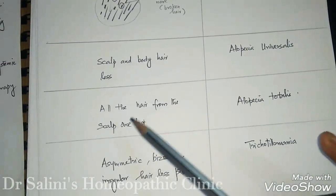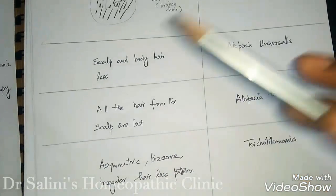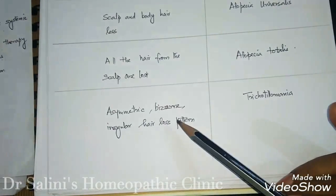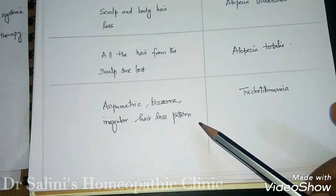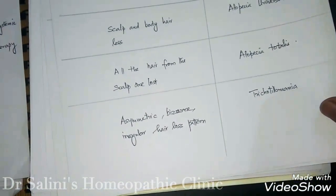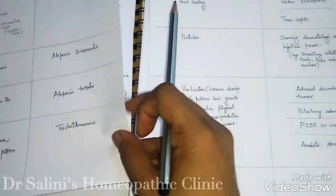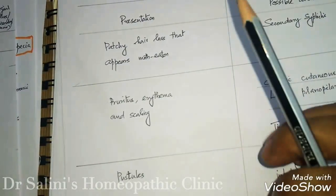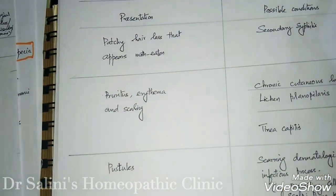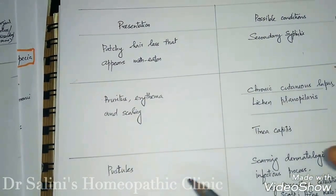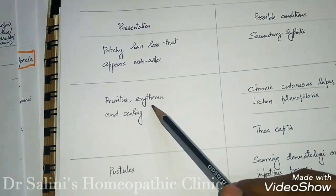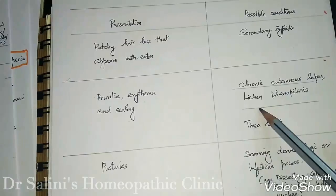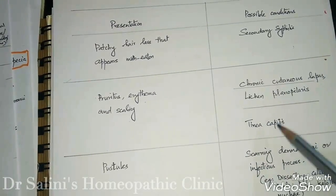When scalp and body hair loss occur together, the possible condition is alopecia universalis, where all hair from the scalp is lost leaving a polished scalp — this is alopecia totalis. Asymmetric, bizarre, irregular hair loss patterns can be seen in trichotillomania. Patchy hair loss that appears moth-eaten is secondary syphilis. Crusting, erythema, and scaling suggest chronic cutaneous lupus, lichen planopilaris, or tinea capitis.